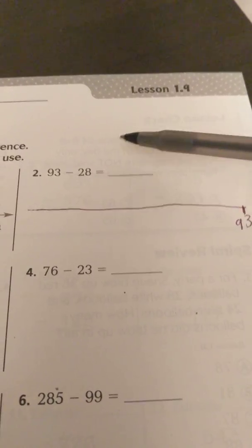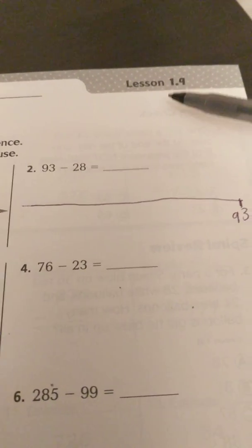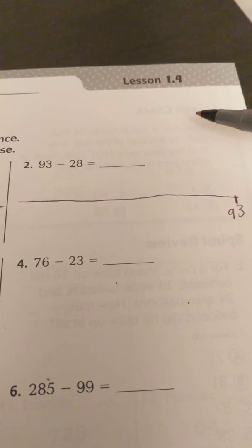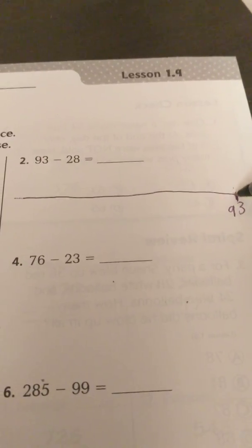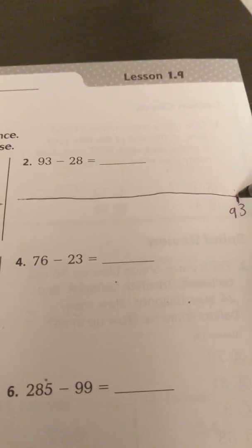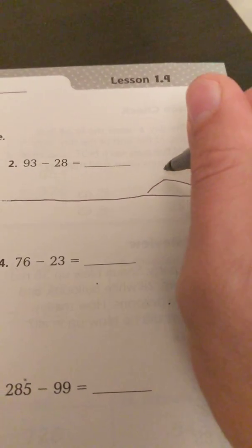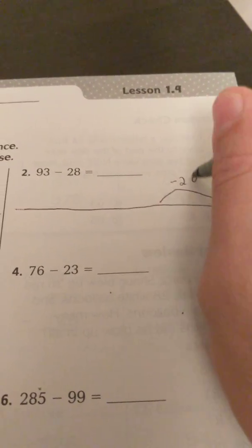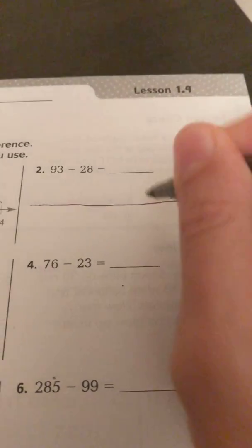Now what I would prefer to do is just subtract all the tens at once. I don't think it's really necessary in third grade to have to go by each ten. So I'm just going to make sure I subtract by 20. I'll just draw a little hump. And subtract minus 20. So I know if I subtract 20 from 93, I'll have 73.